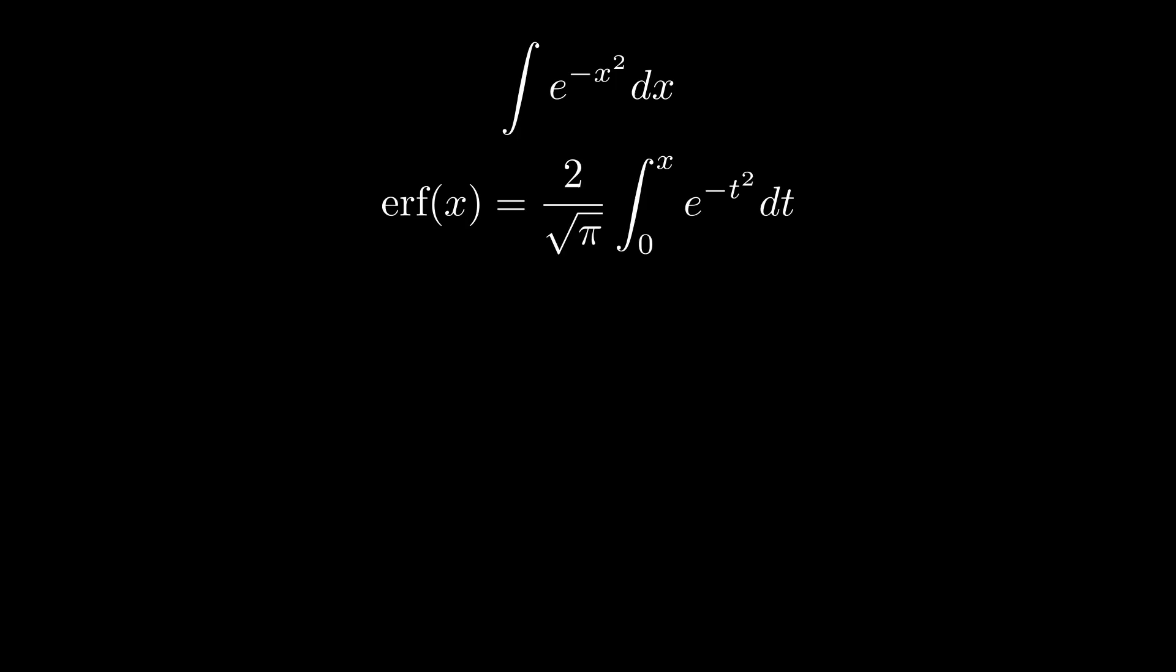When we look at the graph for e to the negative t squared, you will see the familiar bell-shaped curve. As we move along the x-axis, the error function measures how much area we've swept under the curve. Starting near 0, it steadily rises, eventually leveling off at 1. Going to negative x makes it drop towards negative 1, showing its symmetry in the bell curve.